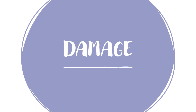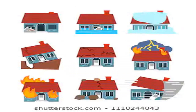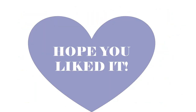Types of damage that can be done to houses: it could be old, there could have been a flood, it could have been affected by snow, it could be an earthquake, it could be just old and cracked, a storm, by fire, by rock falls, and tornadoes.